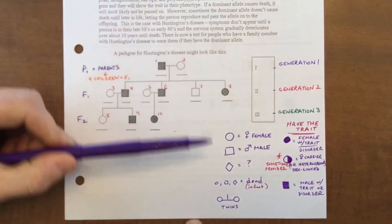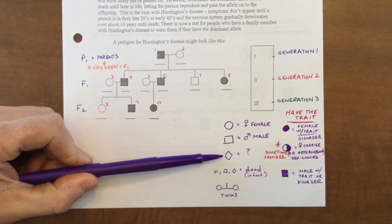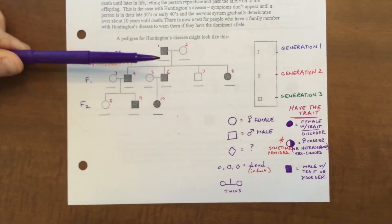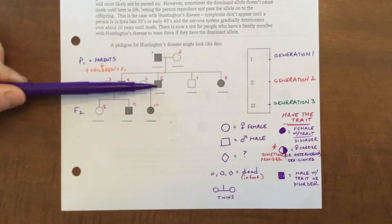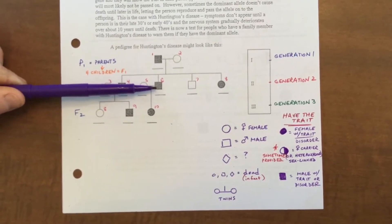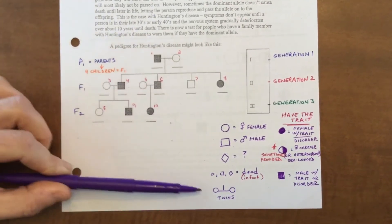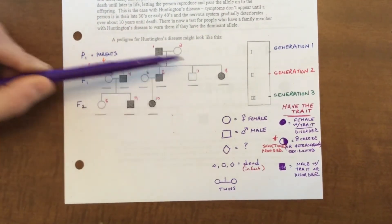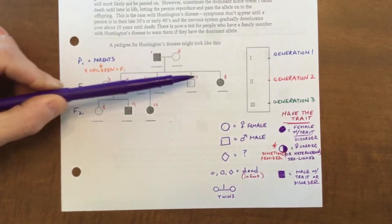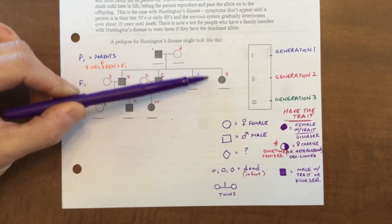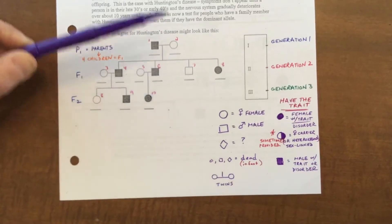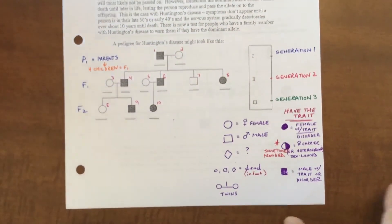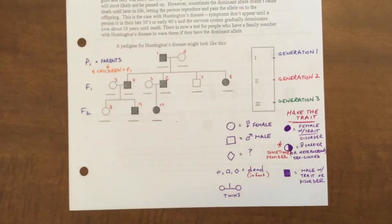Usually we see half-filled shapes with sex-linked traits — they're a carrier, still normal but carrying the recessive gene. You may also see little diamond shapes, which means they knew a child existed but weren't sure if it was male or female. Sometimes you'll see twins represented differently — instead of being connected at the top, that line goes down and connects them at the bottom. That's pretty much your standard key.